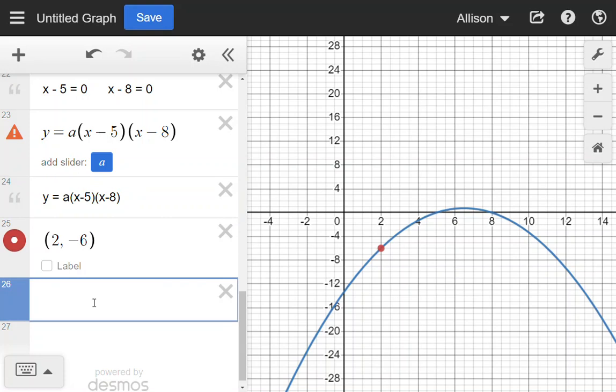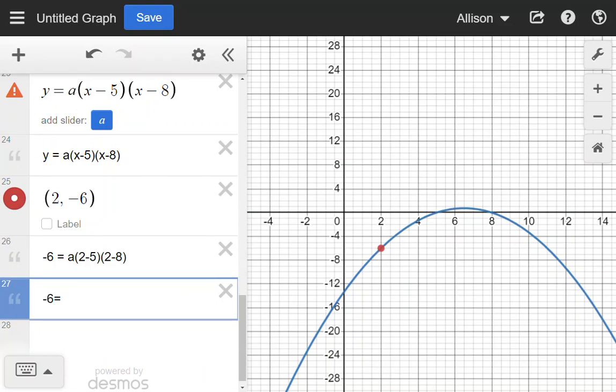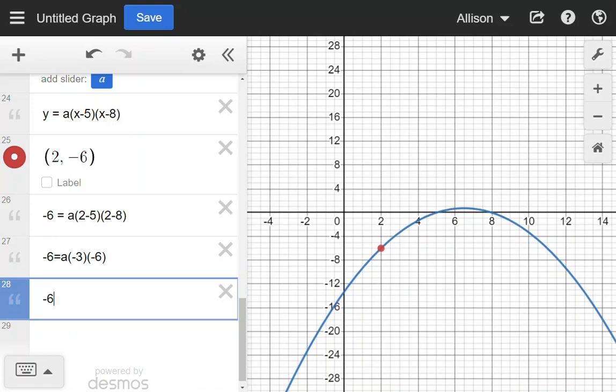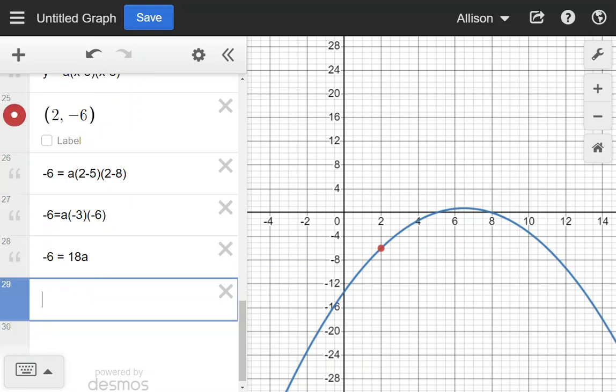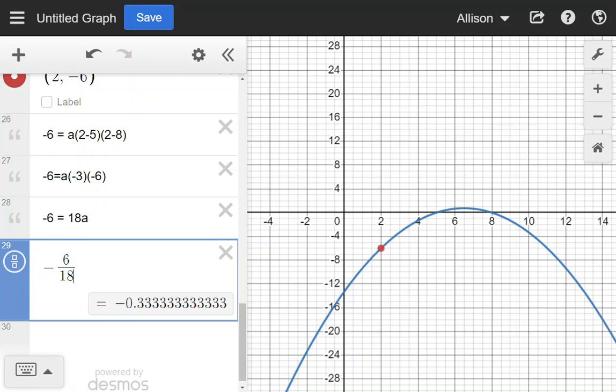So I'm going to take my equation. I'm going to plug in the -6 for the y value and we're going to plug in 2 for our x values, plugging in (2, -6). So if we solve this, that's going to be a times (2 - 5) is -3 and (2 - 8) is going to be -6. So -6 = a times 18 or I could write this as 18a = -6. Then to solve this, I want to divide both sides by 18. So -6 divided by 18, which reduces to the fraction -1/3, is going to be our a value.